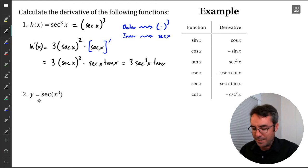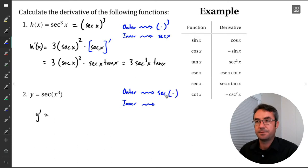All right. Let's try the next one. Y equals secant of x cubed. Now we're going to calculate y prime. And we see that secant is on the outside. So that's going to be our outer function. So again, we just want to identify what's the outer function, what's the inner function. So the outer function is secant here. And then the inner function is what's happening inside the parentheses. So that's our x cubed.